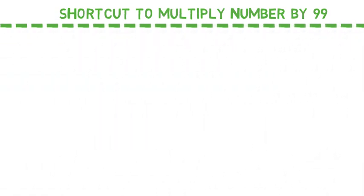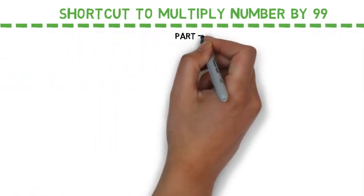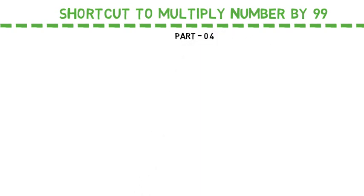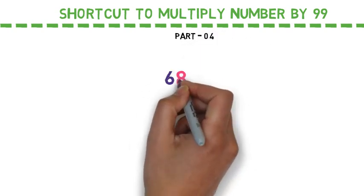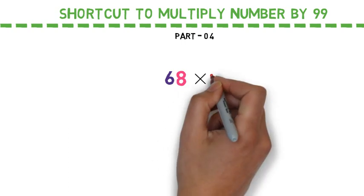My dear friends, this is part 4 of multiplication. Let us consider number 68 and I am supposed to multiply this by 99.